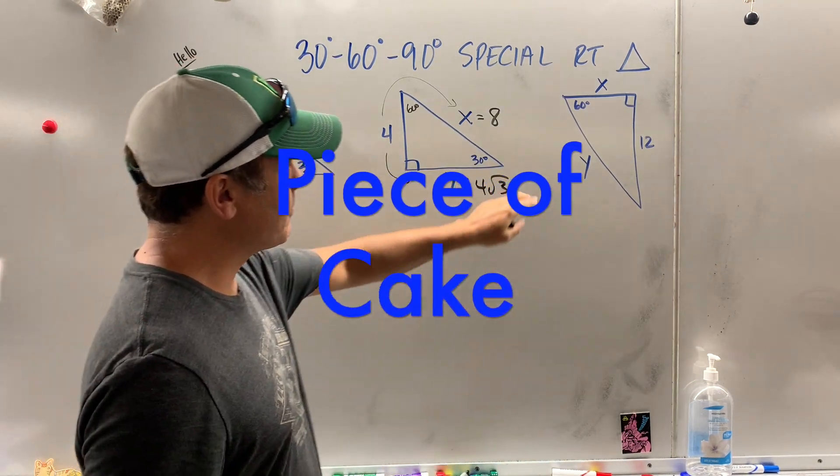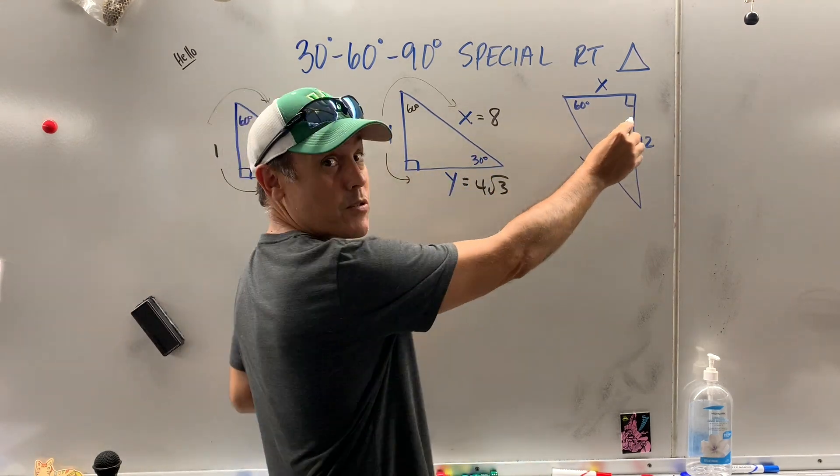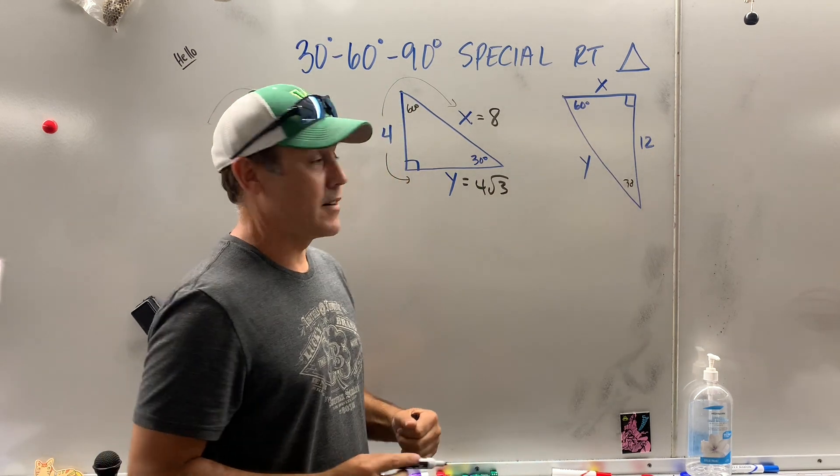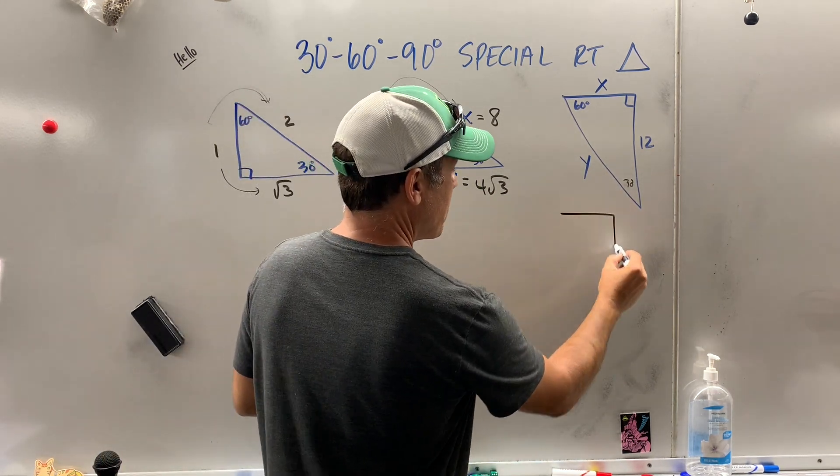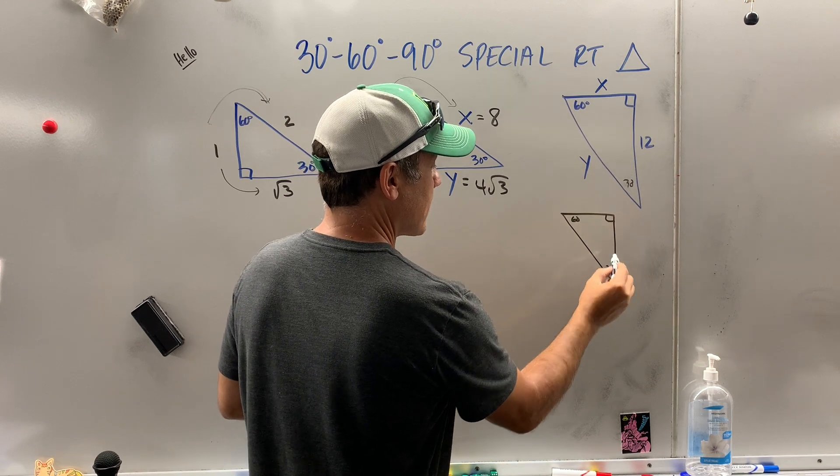Now, over here, you could see it's oriented a different way. Well, first off, it's a right triangle. I see a 60. I'm going to put a little 30 degrees there. And then look what I'm going to do. I'm going to orient my reference triangle so it looks like that.